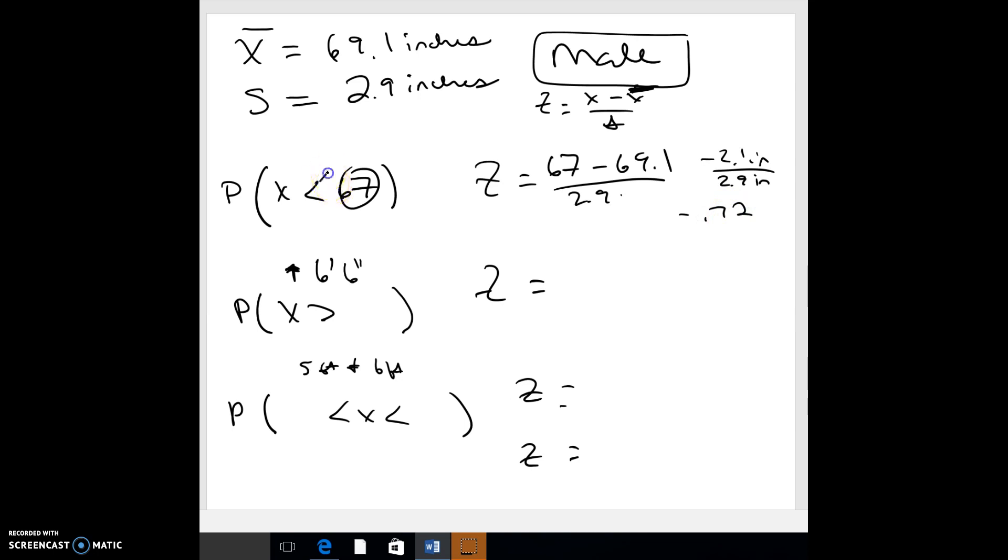We like it when it goes to the left. See how less than makes like an L? So we like it when it goes to the left because the chart goes to the left. Here's my little thing, here's zero. Negative would be on this side, negative 0.72.